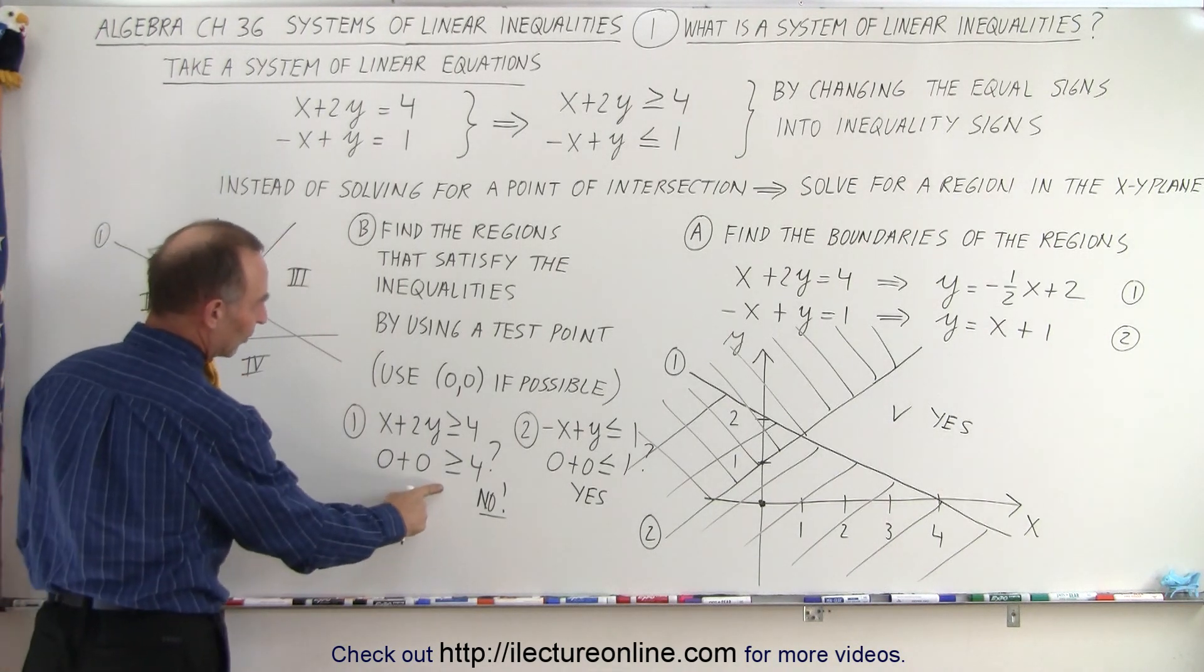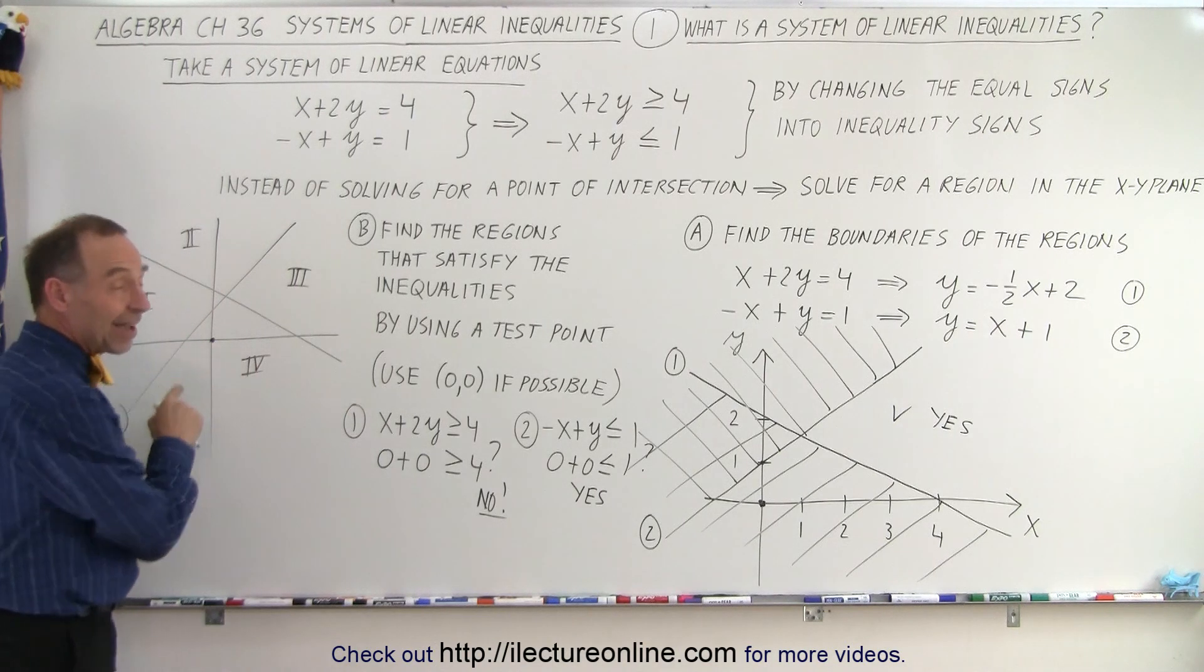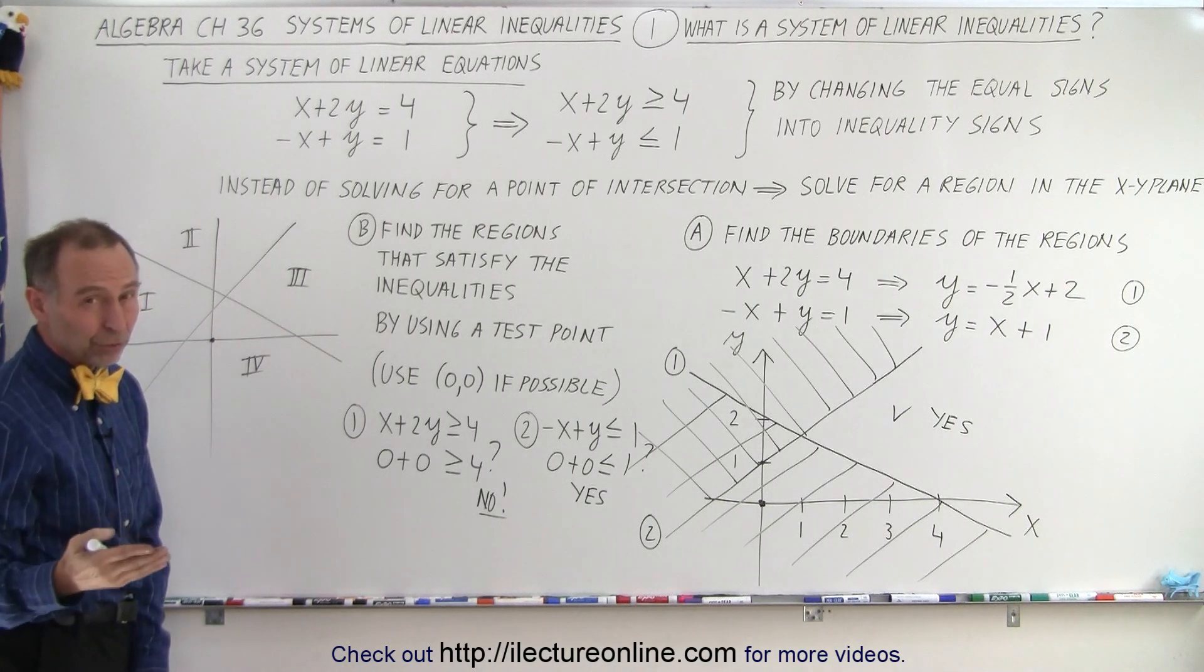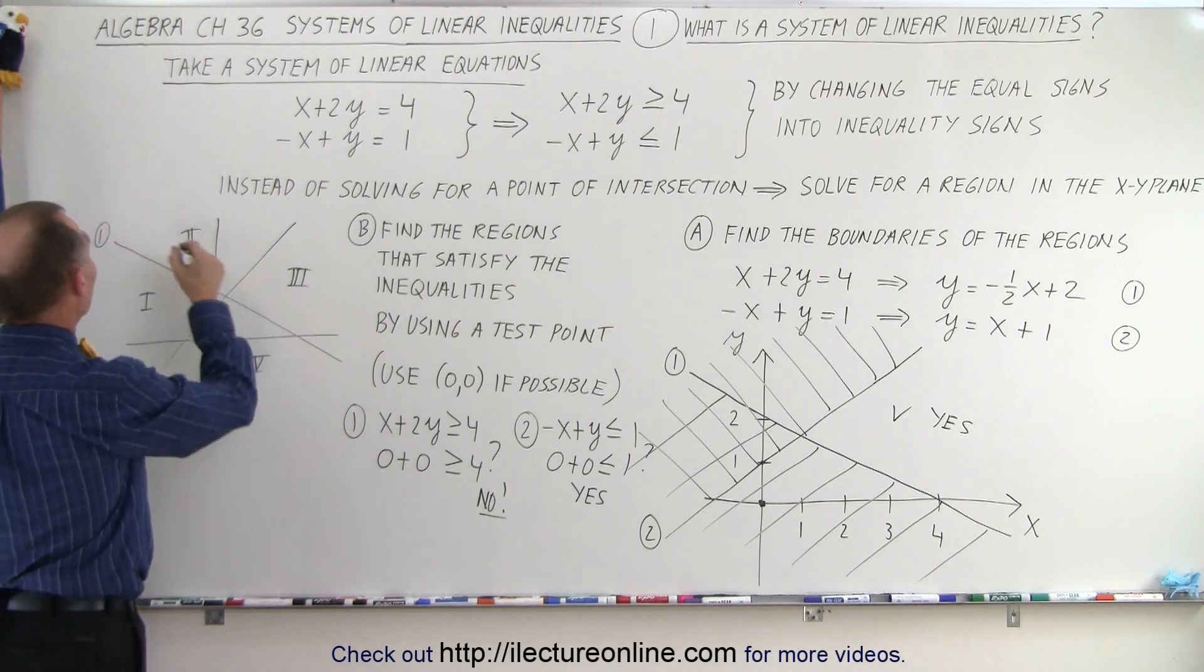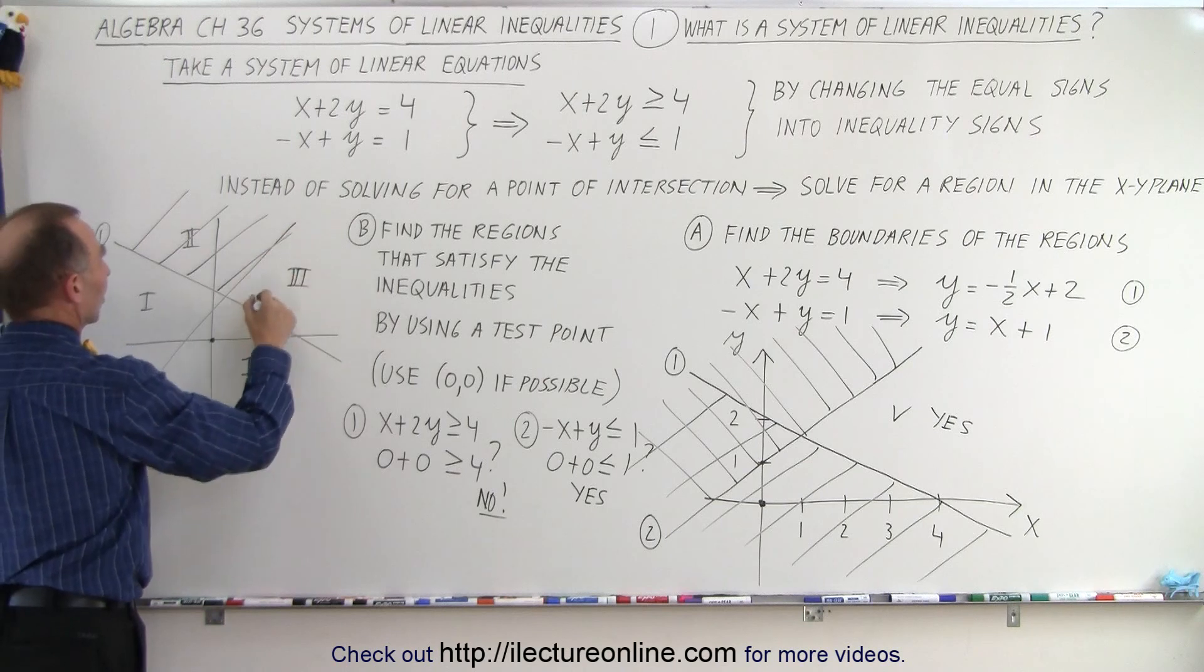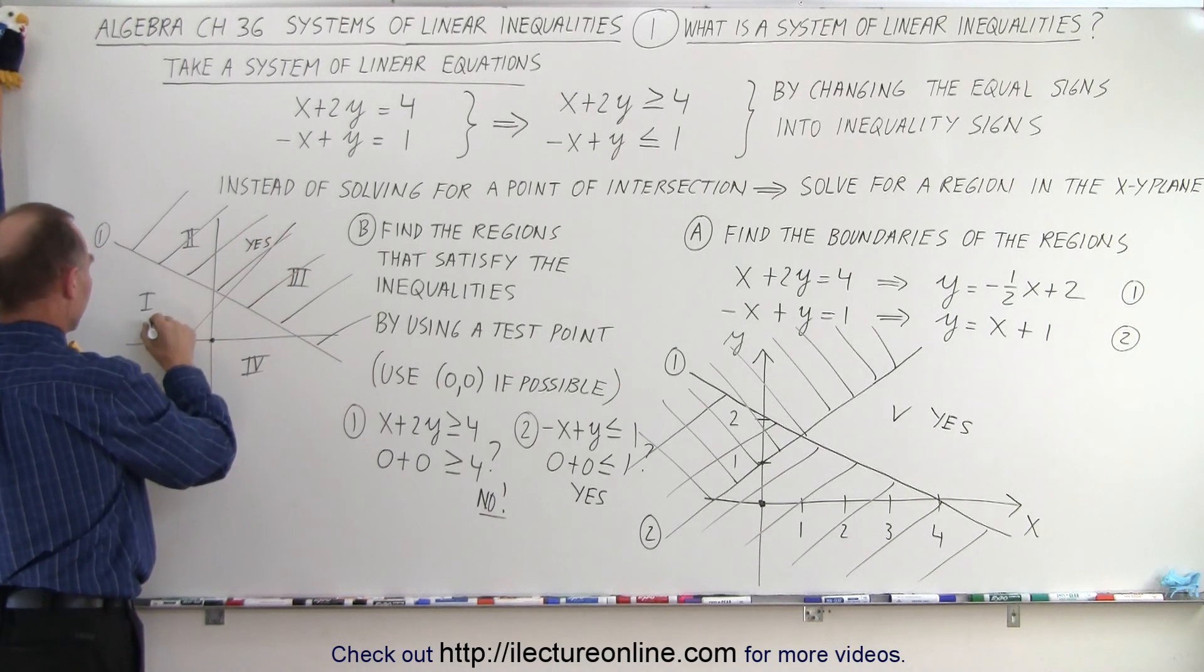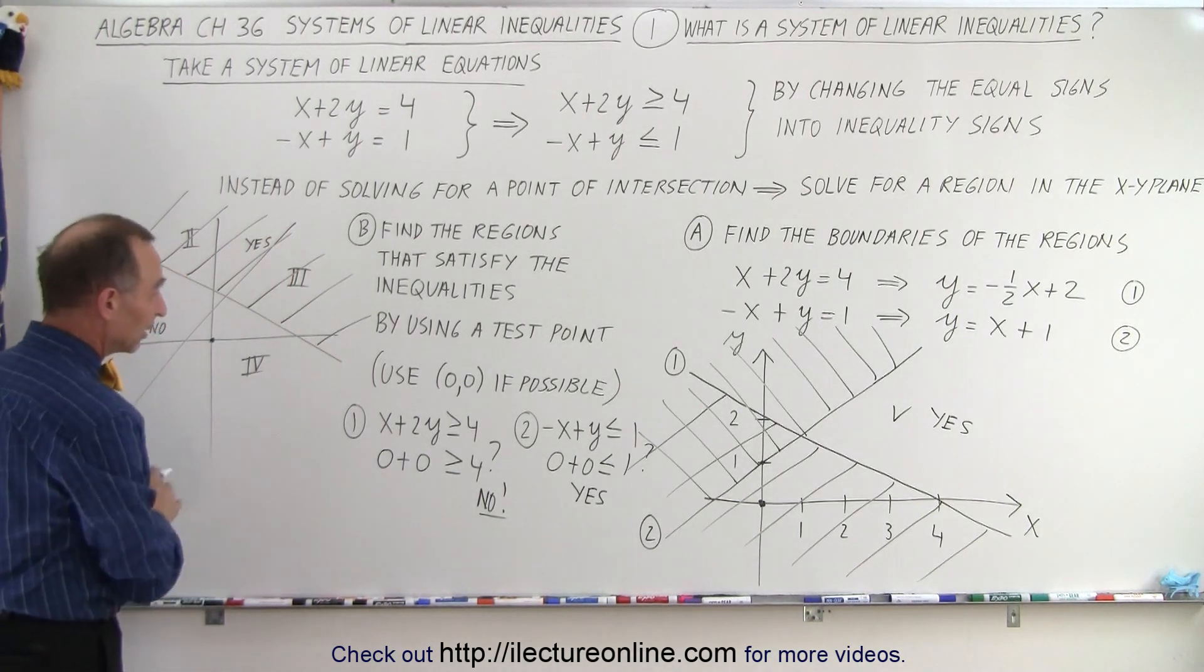And the first case we said, okay, the point zero lies on the incorrect side of this line. So the way some books do it and some teachers do it, they like to shade the side that satisfies. So say this side satisfies the solution. So this is a yes and this is a no for line number one. And then they do it again for line number two.